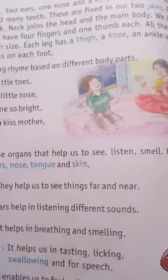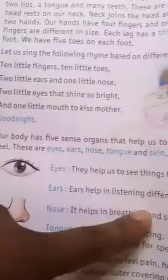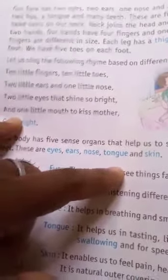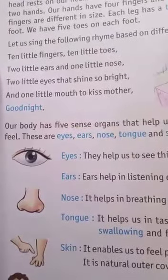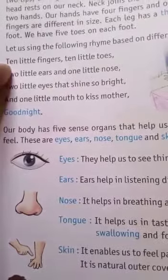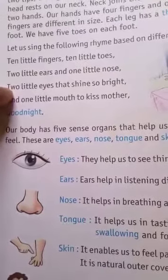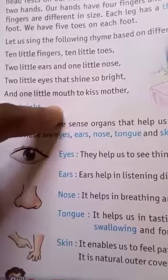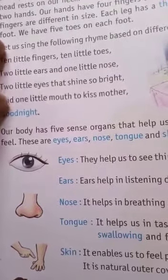You have to remember the body parts. One very easy rhyme is given here, by remembering which you can easily remember our fingers, toes, nose, ears, and eyes. The rhyme is: Ten little fingers, ten little toes, two little ears and one little nose, two little eyes that shine so bright, and one little mouth to kiss mother. I hope all of you like this rhyme and will remember it.